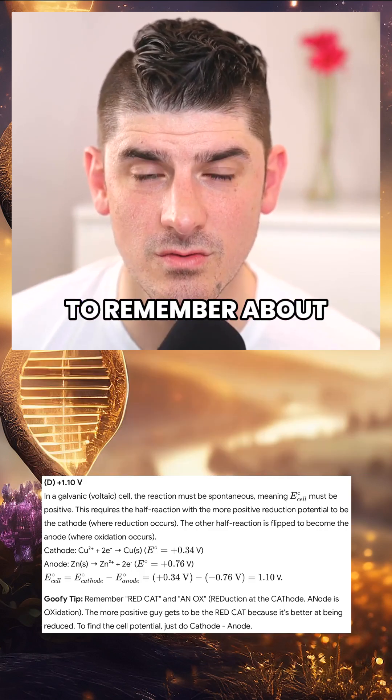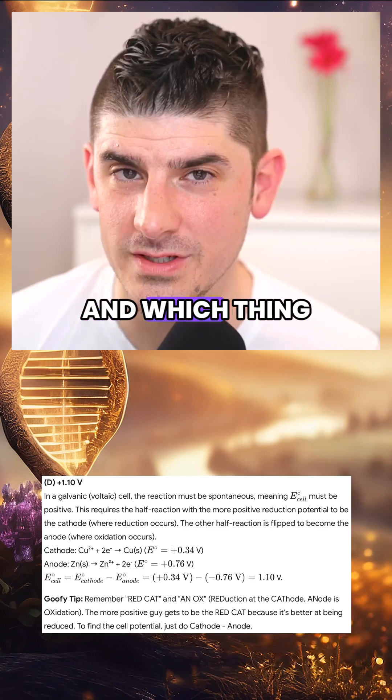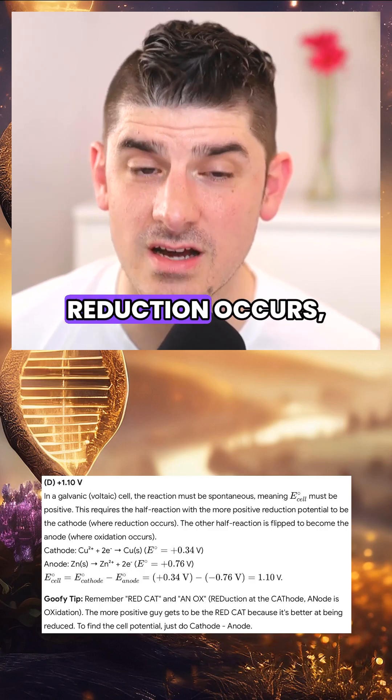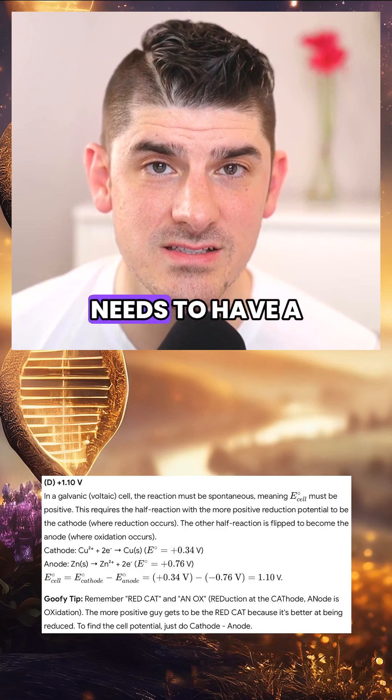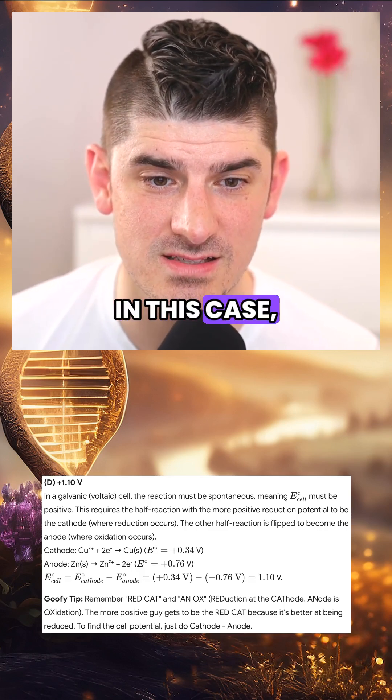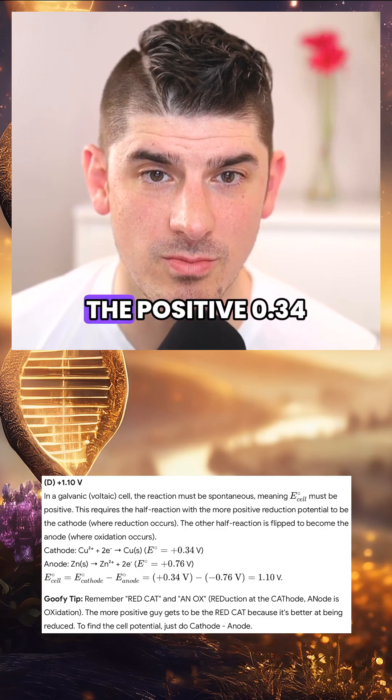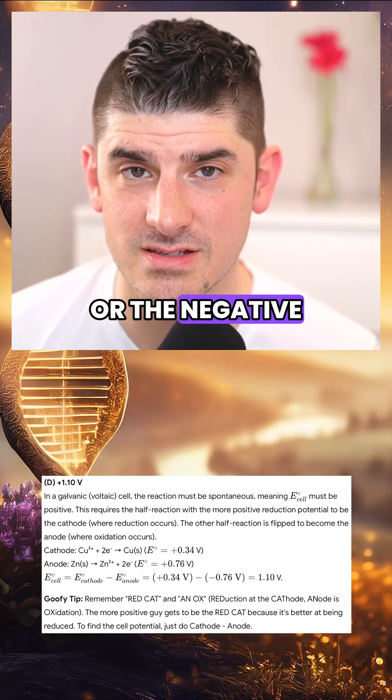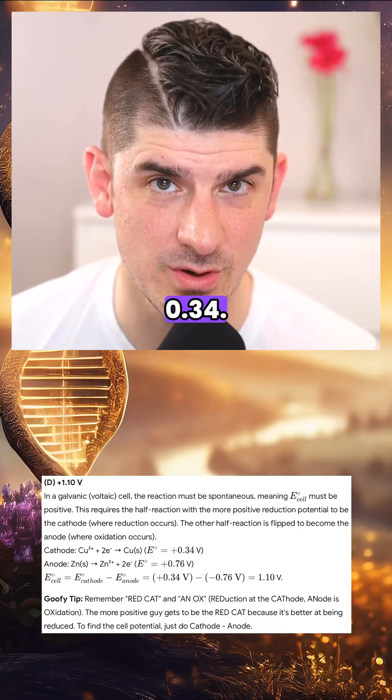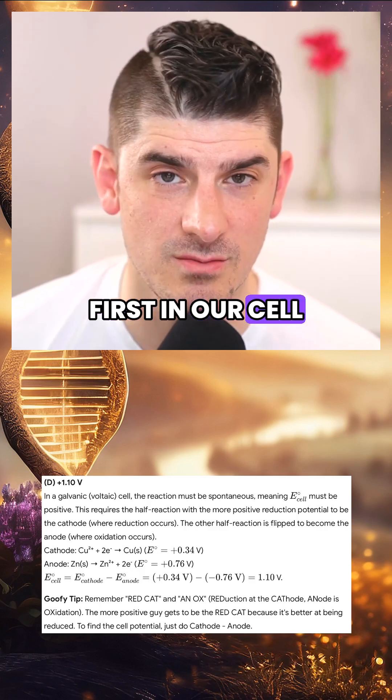The other thing to remember about this is that when we're deciding which thing gets to be the cathode and which thing gets to be the anode, the cathode, or the reduction, needs to have a more positive reduction potential. In this case, this means that the cathode from the positive 0.34 or the negative 0.76, the more positive one between those two numbers is the positive 0.34. So this tells us to put that one first in our cell potential equation.